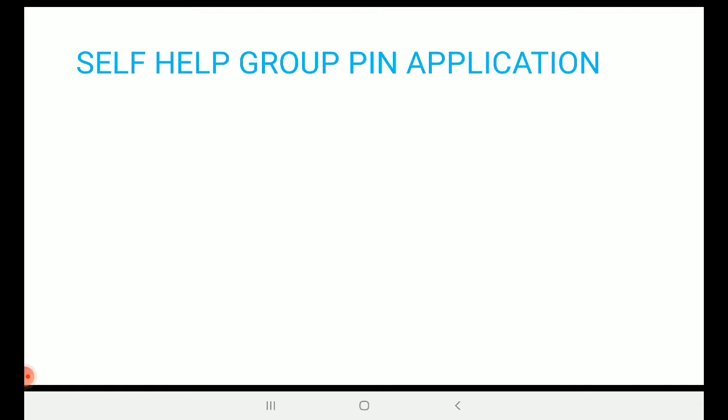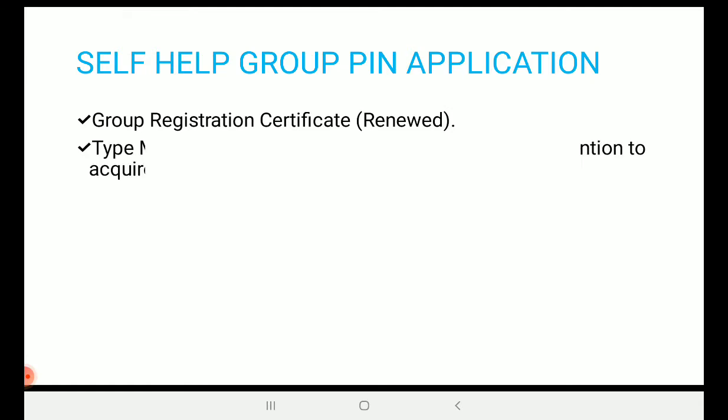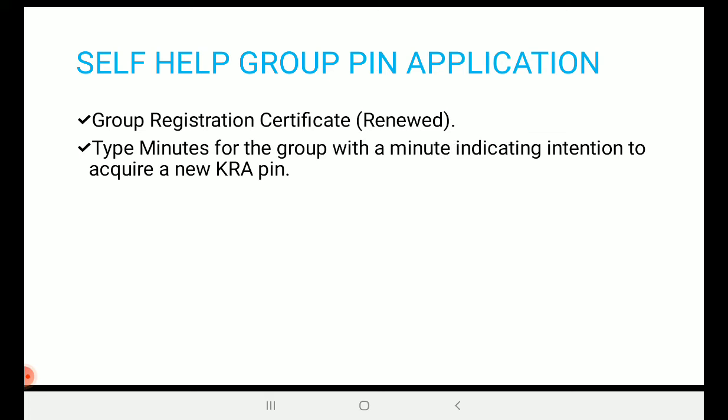First things first — put the requirements in order. Number one: you need to have your group registration certificate. If the certificate is more than one year old, it must be renewed and stamped. Number two: you need to have typed minutes for the group, with a specific clause indicating your intention to acquire a KRA PIN.